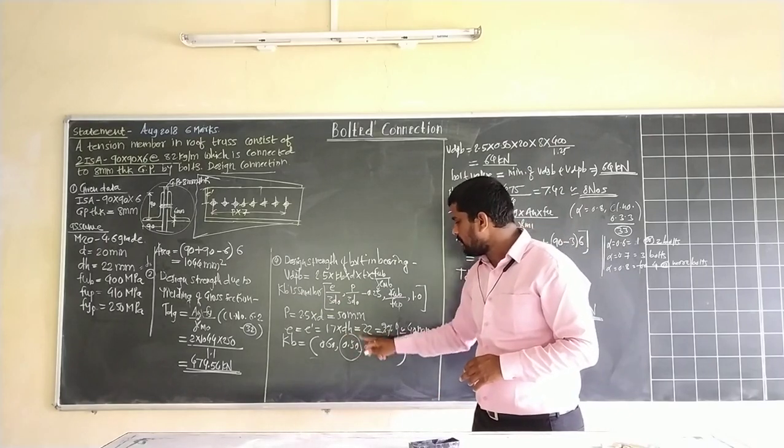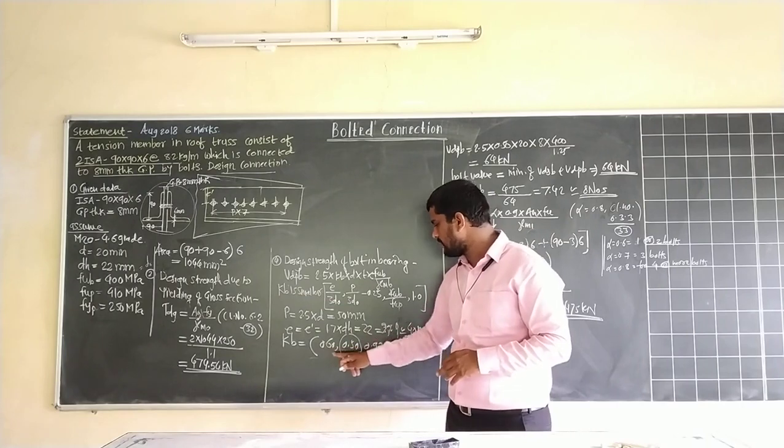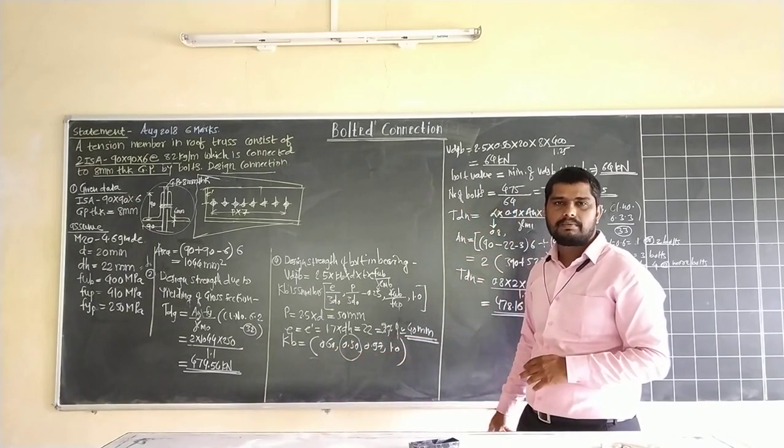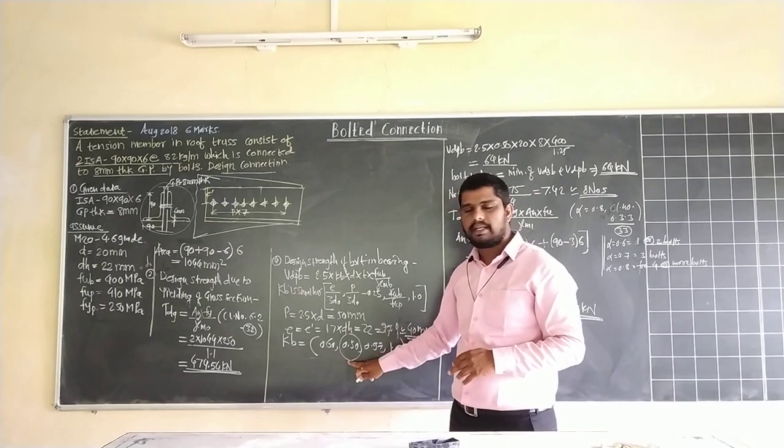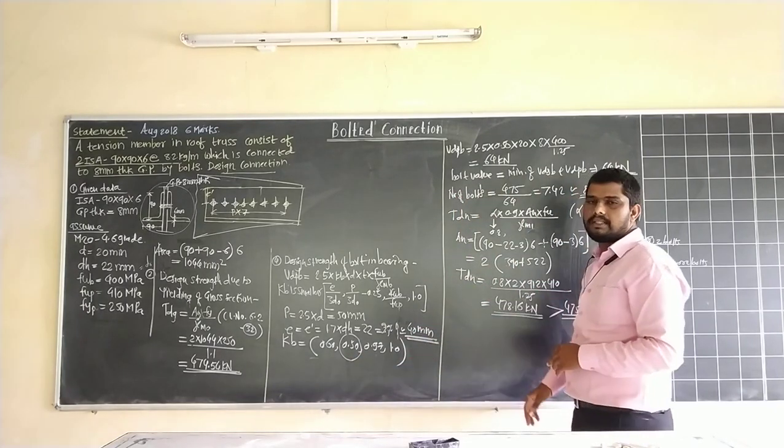We get smaller answer is 0.50. First answer 0.6, 0.5, 0.96, 0.97, 1. Out of that minimum value is 0.5, so we take this into consideration.